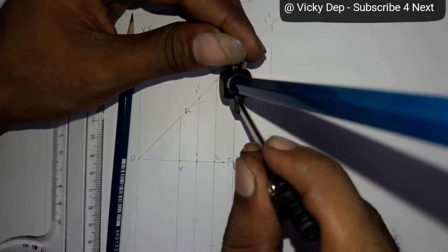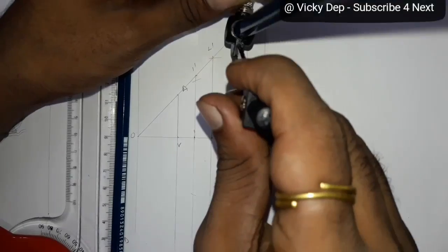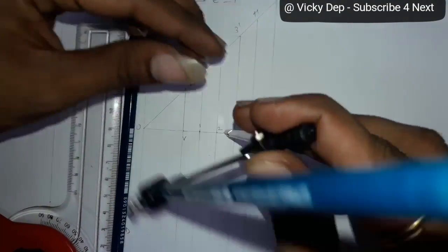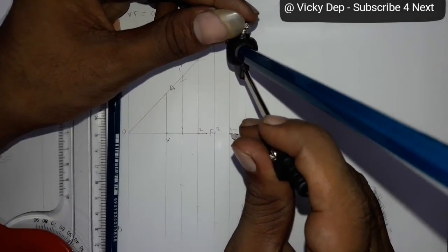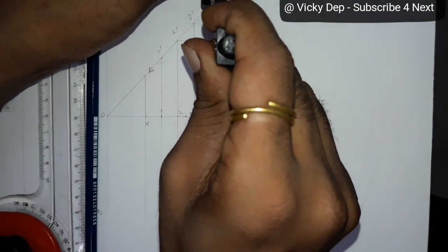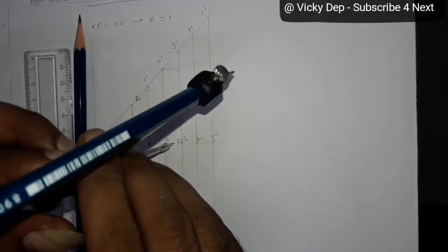Now take 3 to 3 dash as a radius from F. You have to mark another 2 points. Take 4 to 4 dash, center point F, draw another 2 lines.